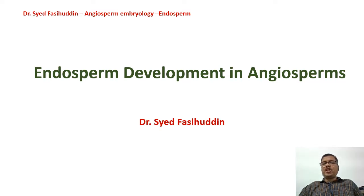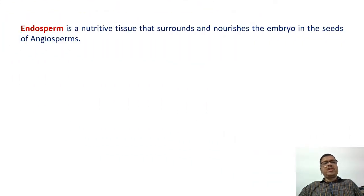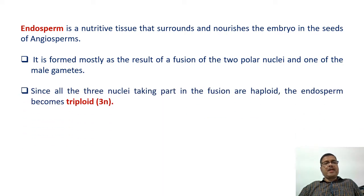Endosperm development in angiosperms. Endosperm is a nutritive tissue that surrounds and nourishes the embryo in the seeds of angiosperms. It is formed mostly as the result of a fusion of the two polar nuclei and one of the male gametes. Since all three nuclei taking part in the fusion are haploid, the endosperm becomes triploid in nature.